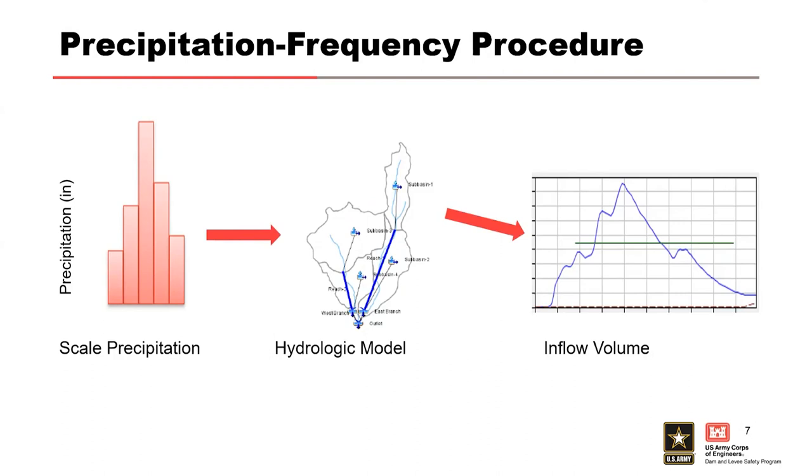This process assumes our estimate of volume is AEP neutral, which means that the annual exceedance probability for our volume estimate is equal to the annual exceedance probability for the point precip that we started with. So, if we start with the 100-year precip rainfall, modeling that all the way through HMS, we get our three-day volume critical inflow, we're assuming that's 100-year volume. So, it's AEP neutral, precip to volume.